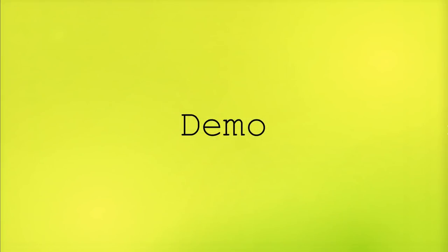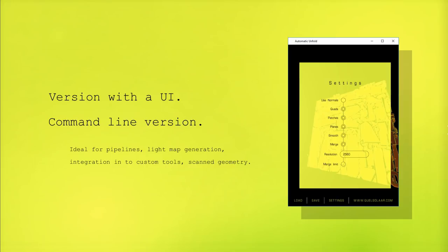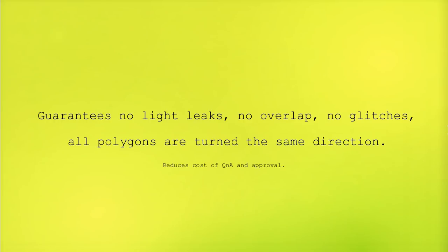Let's talk a little bit more about how this works. There's also a command line version. If you build a pipeline — for light mapping, a custom tool, scan geometry — you might not want an artist to click load and save; you might want a fully automatic pipeline. It guarantees no light leaks, no overlap, no glitches, and all polygons are turned the same way. You can guarantee that your model works, and this reduces a lot of cost in QA approval.